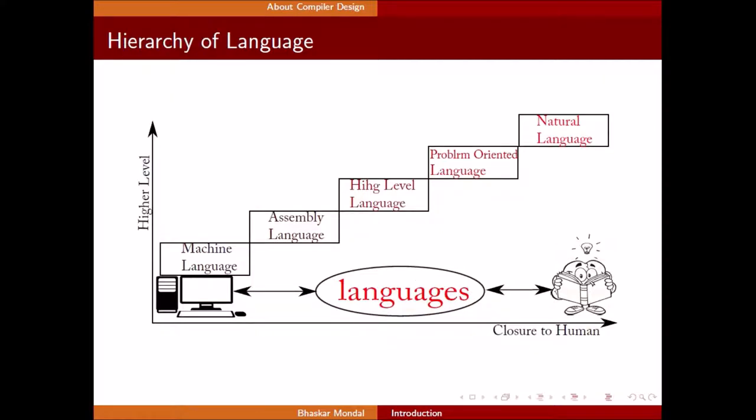Now, here is a language hierarchy. You can see here, at the bottom of the hierarchy, there is machine level language, then assembly language comes, then high level language comes, then problem oriented language comes, next natural language comes. The level is increasing with the y-axis, and the friendliness to the user is increasing towards the x-axis.